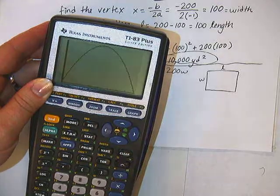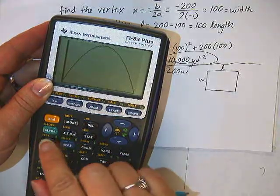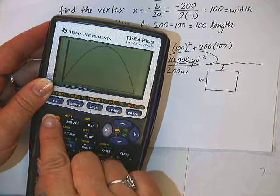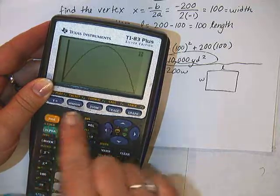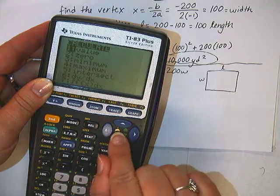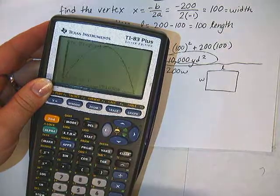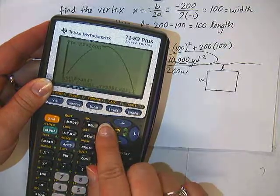Now we're not going to worry about the y values at all. We're just going to use a function that this calculator has called zoom fit. So I'm going to go to the zoom button, and I go to option 0, which is zoom fit. Then I wait, and it will graph my parabola neatly within that domain, and fit the range to it perfectly.